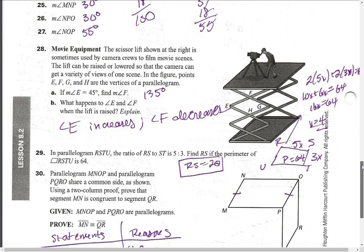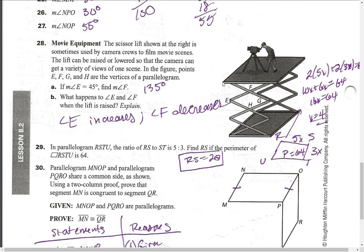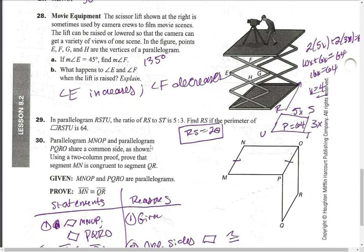Number 28 is a scissor lift. It tells you EFGH is a parallelogram. If angle E is 45 degrees, F has to be 135. As angle E gets bigger, angle F gets smaller.